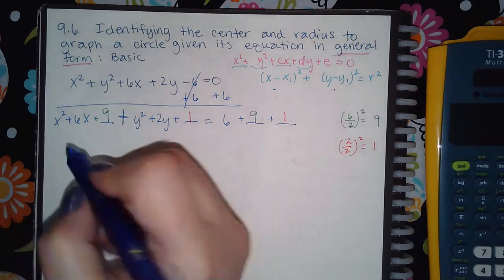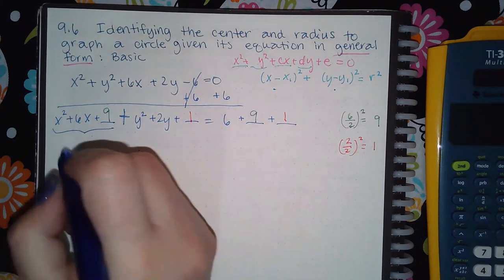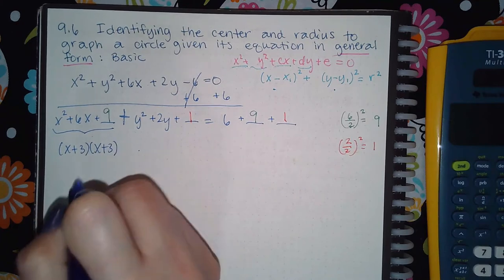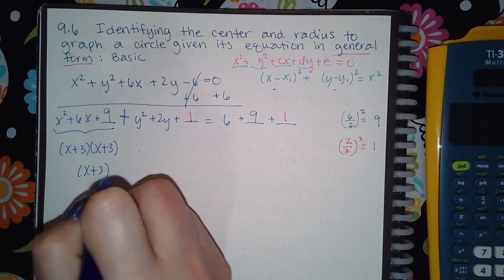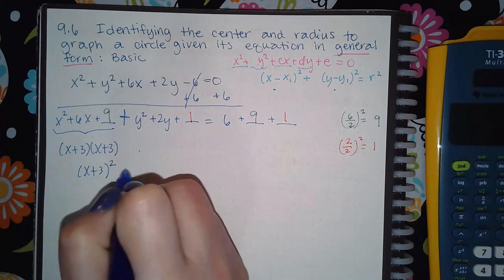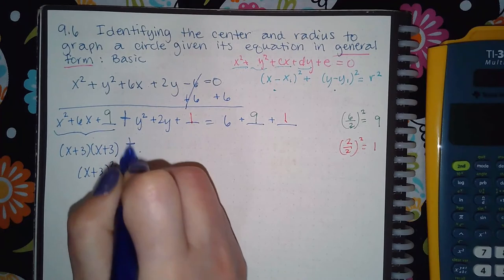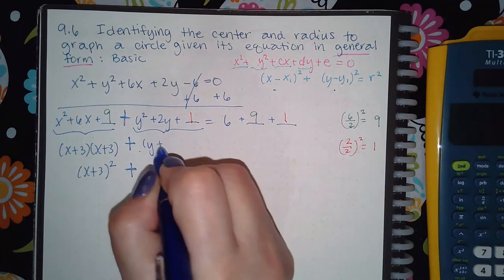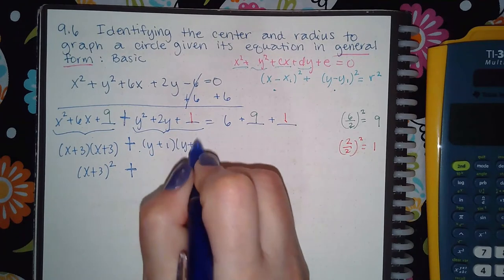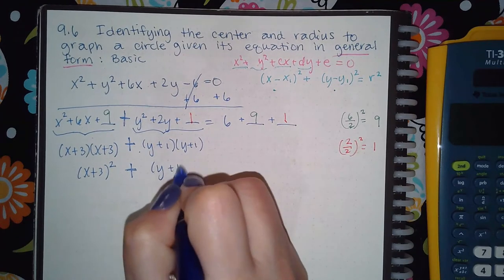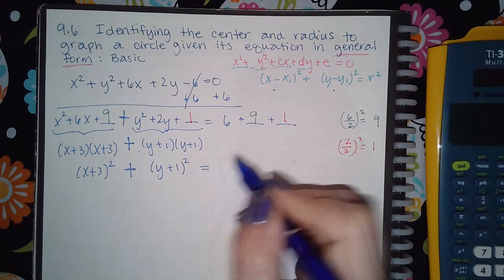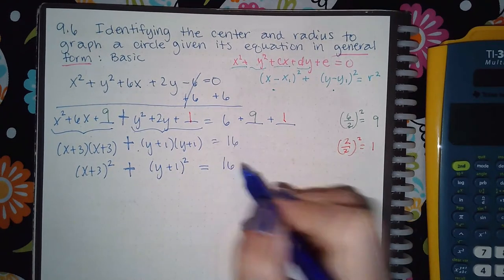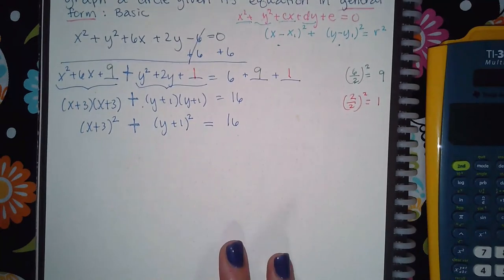Once that's done, factor the x part: x plus 3 times x plus 3, written as (x + 3) squared. Then factor the y part: y plus 1 times y plus 1, written as (y + 1) squared. On the right-hand side, add all those values together and get 16.